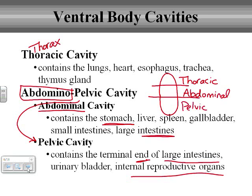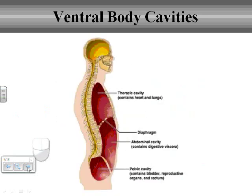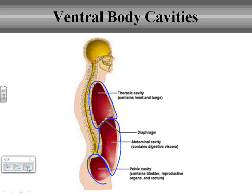It's kind of a top to bottom organization. We have our thoracic cavity on the top, then our abdominal cavity in the middle, and our pelvic cavity at the bottom. These two cavities together are commonly referred to as the abdominal pelvic cavity.